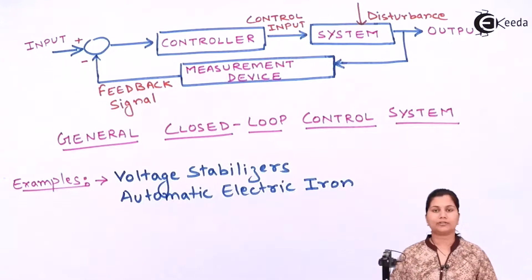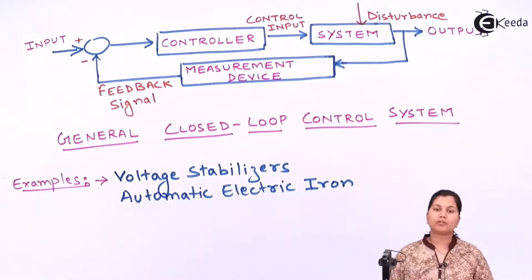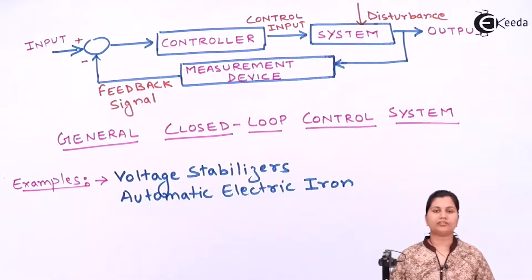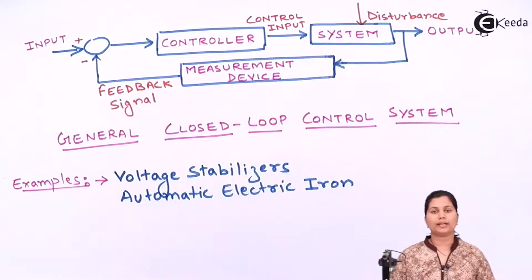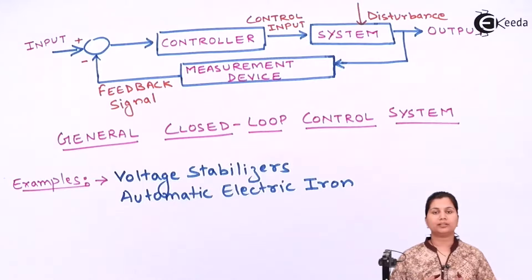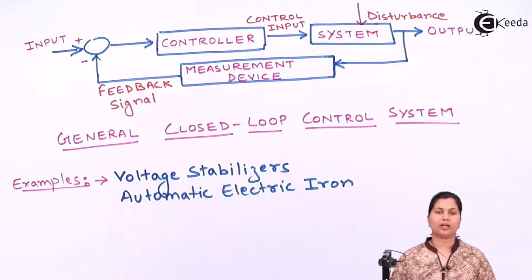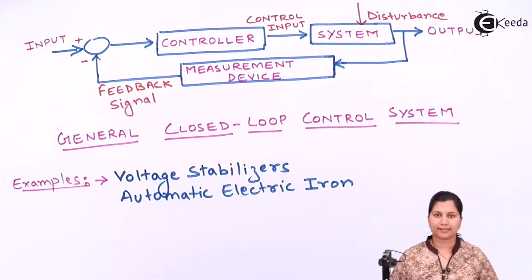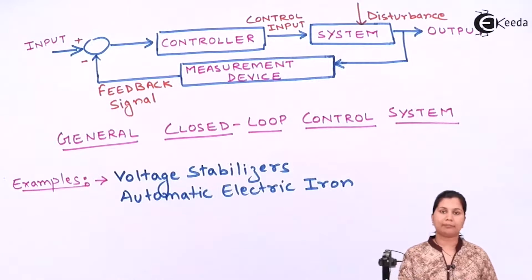The next example of a closed loop control system is the automatic electric iron. In the automatic electric iron the temperature which we want can be changed by moving the knob. In this way we are adjusting the temperature of the electric iron, and the desired temperature we want is provided by the device. So this is an example of a closed loop control system.